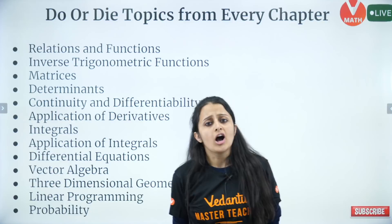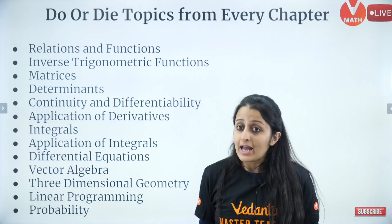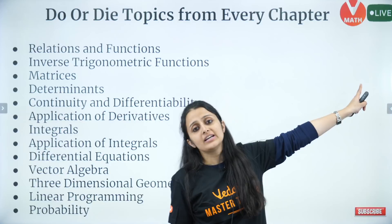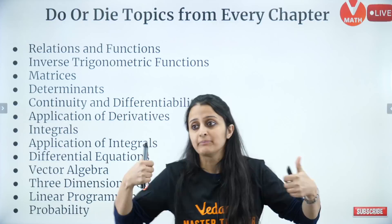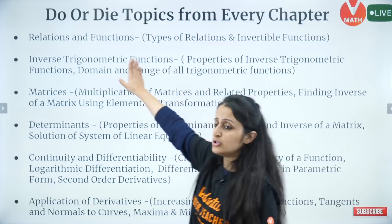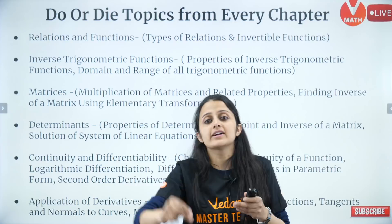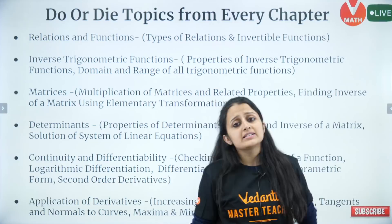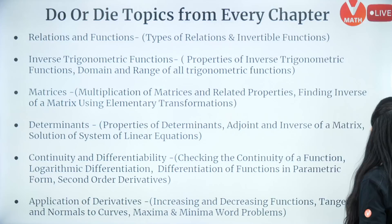Let me know how many of you want to know, from every chapter, the most important topics where four-markers and six-markers come from. Make sure you subscribe to Vedantu Math, like this video, and in the comment section tell me if you need do or die topics for physics for JEE Mains and 12th boards. I have scanned all past 10 years of papers, the latest sample papers, and analyzed this list.